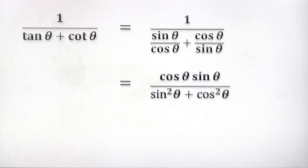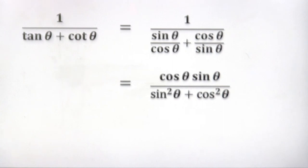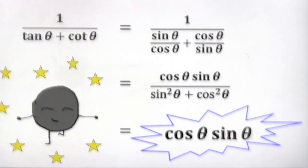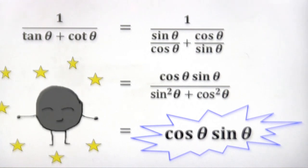You can then simplify the equation to get cos θ times sin θ over (sin²θ + cos²θ). Since sin²θ + cos²θ equals one, the final answer is cos θ times sin θ. Easy, right?